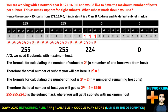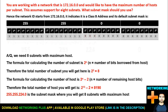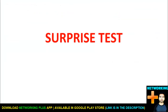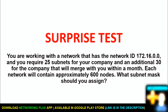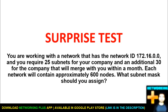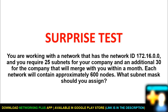Therefore the subnet mask is 255.255.224.0 — this gives you eight subnets with the maximum number of hosts. Now for the surprise test: you are working with a network ID of 172.16.0.0, required to support 25 subnets for your company and an additional 30 for a company merging within a month, with each network containing approximately 600 nodes. What subnet mask should you assign? Try to solve this and let me know in the comments.